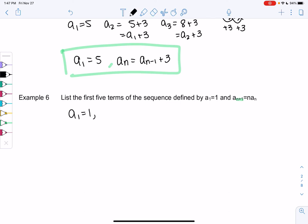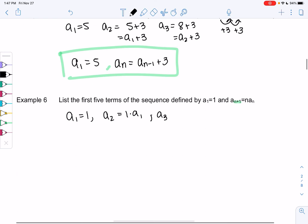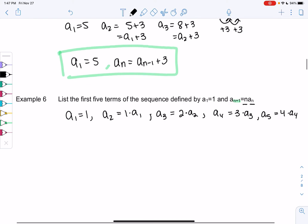And then a_{n+1}, so then we'll jump to 2 because that would be next, would be n times a_n. So that would be 1 times a_1. And then a_3 would be 2 times a_2. a_4 would be 3 times a_3. And then a_5 would be 4 times a_4. So let's figure out what these are.